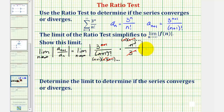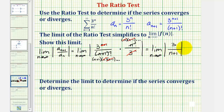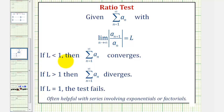So our simplified limit is the limit as n approaches infinity of the absolute value of three divided by n plus one. As n approaches infinity, the numerator stays at three while the denominator increases without bound, and therefore this limit equals zero. Since zero is less than one, the infinite series converges by the ratio test.